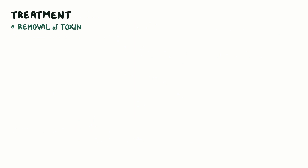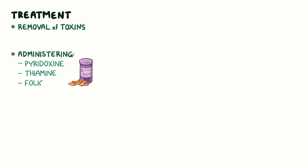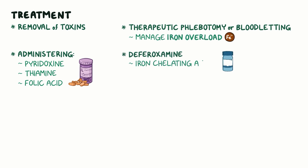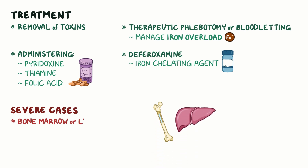Treatment of sideroblastic anemia involves removal of toxins if there are any, and administering pyridoxine, thiamine, and folic acid. Therapeutic phlebotomy or bloodletting can be used to manage iron overload, as well as desferrioxamine, an iron chelating agent. In severe cases, a bone marrow or liver transplant might be needed.